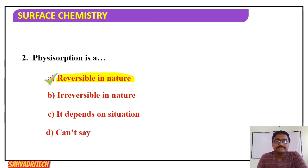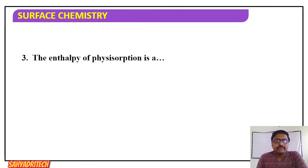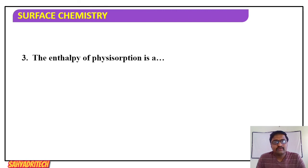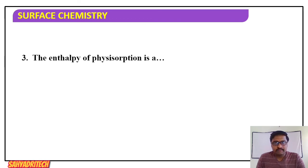Third MCQ: the enthalpy of physisorption is — options: A) 20 to 40 kJ/mol, B) 80 to 240 kJ/mol, C) 40 to 80 kJ/mol, D) none. The enthalpy of physisorption is 20 to 40 kilojoules per mole. For chemisorption it is 80 to 240 kilojoules per mole. Answer: option A.